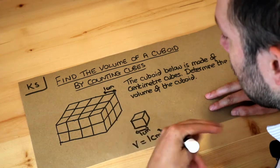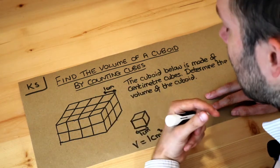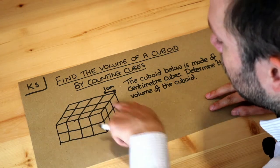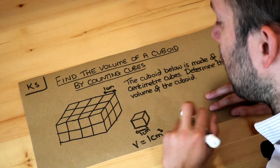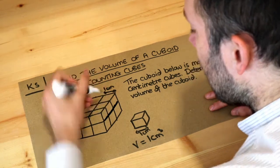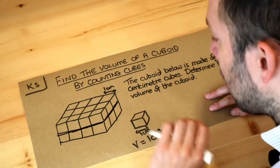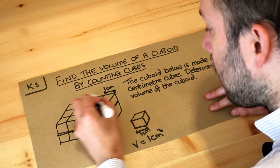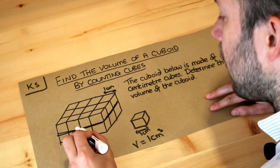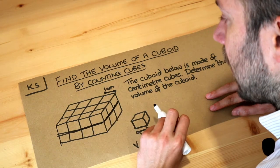There is a formula for finding the volume of a cuboid which we'll come to in the next video, but for now we just want an effective way of counting the cubes. Let's look at the number of cubes on each slice of the cuboid. If you look at this top layer, you can see we have a 4 by 3 rectangle.